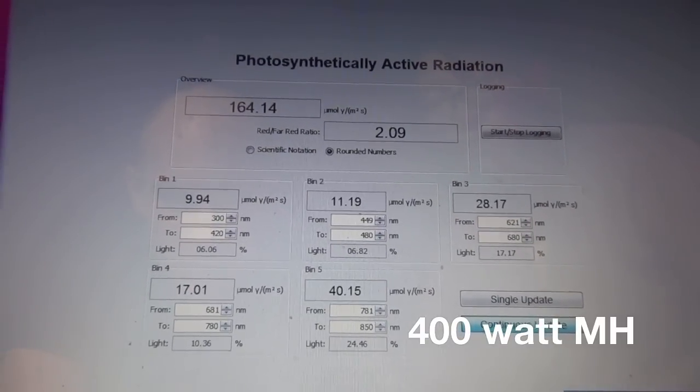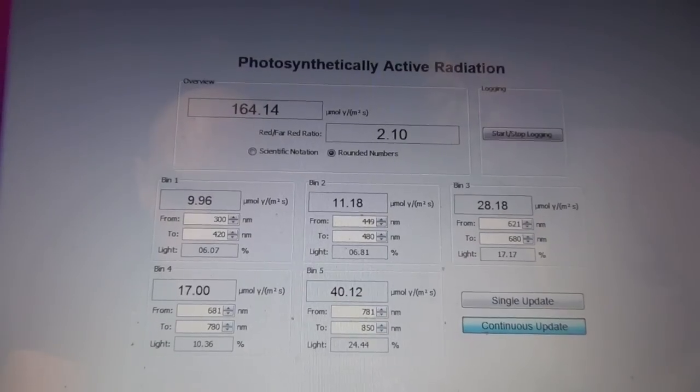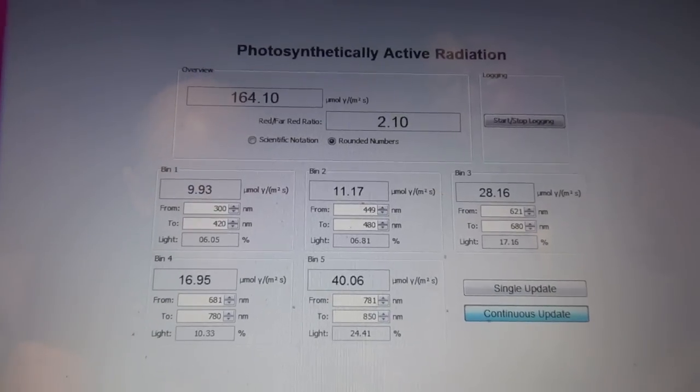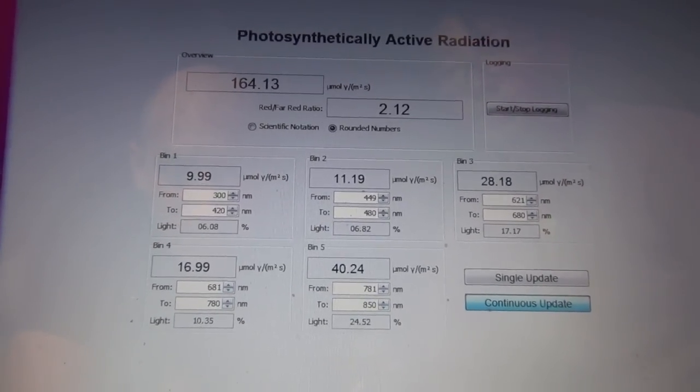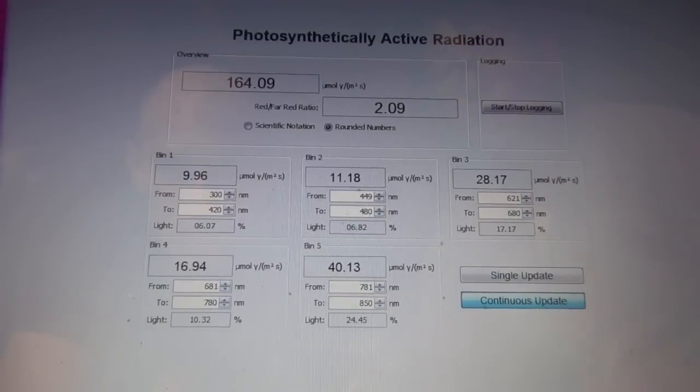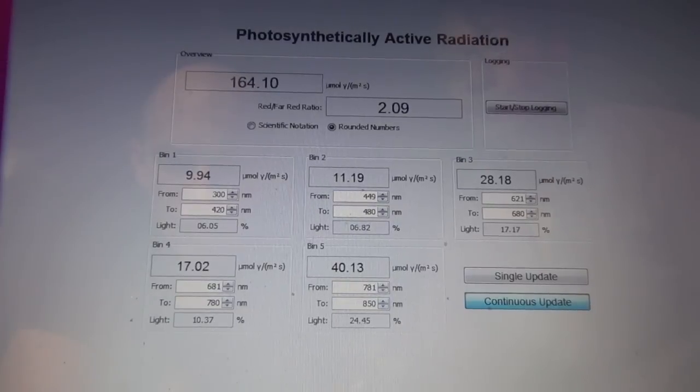It's quite a different world from what we just saw with the Lumigro 330. What were we putting out with the Lumigro? We had 26 micromoles with the Lumigro, so this is actually less than half. And we know blue is an important wavelength for vegetative.